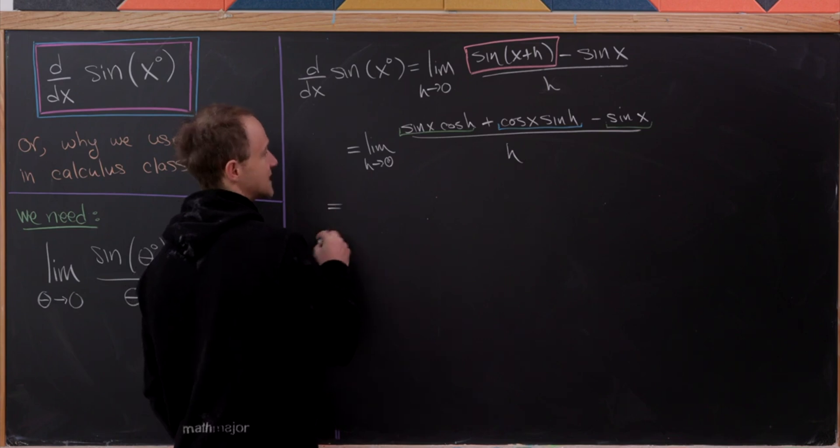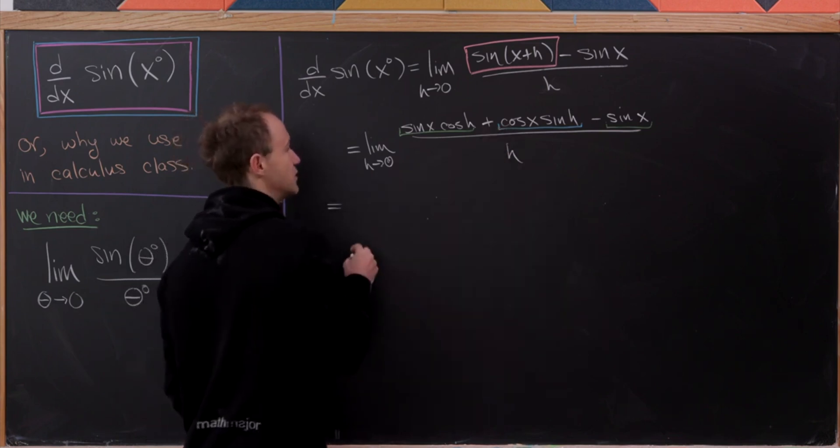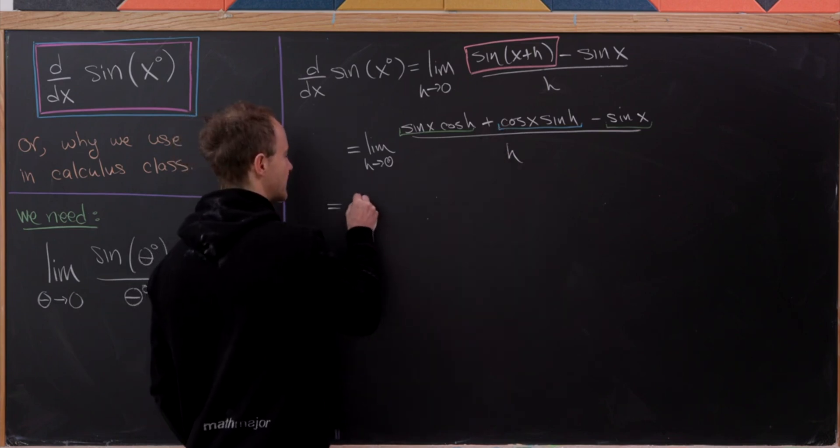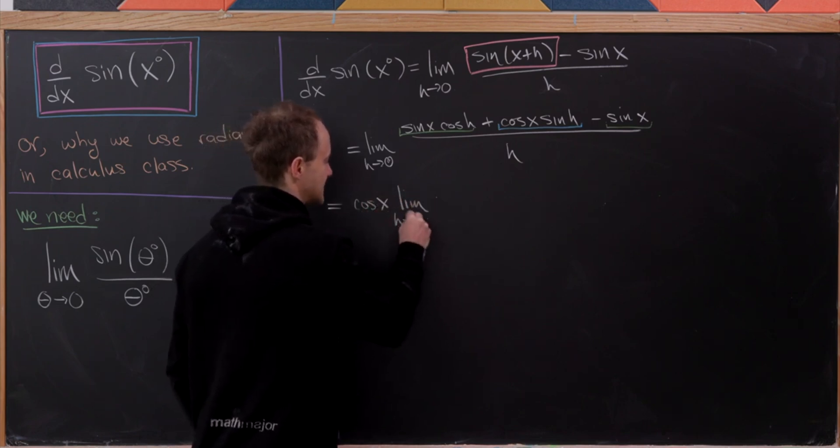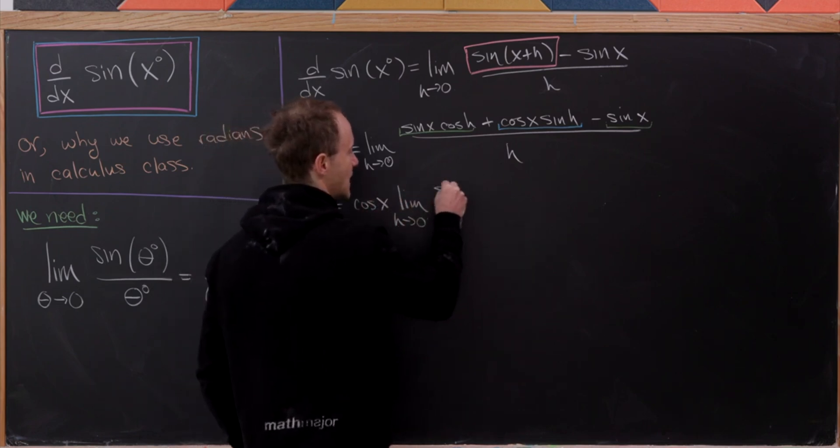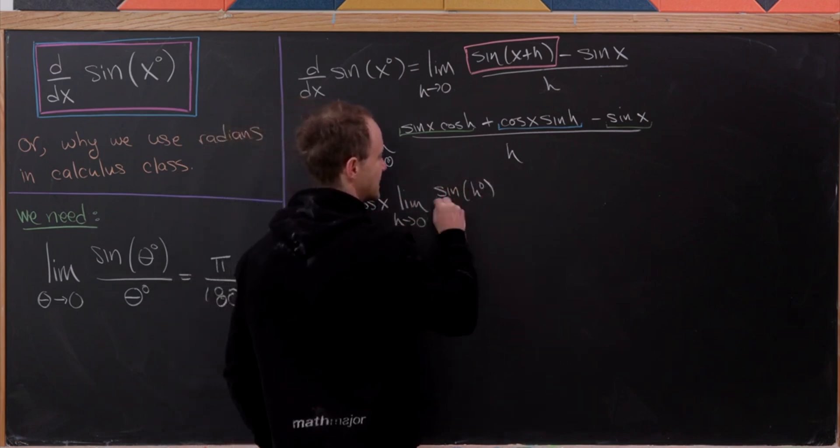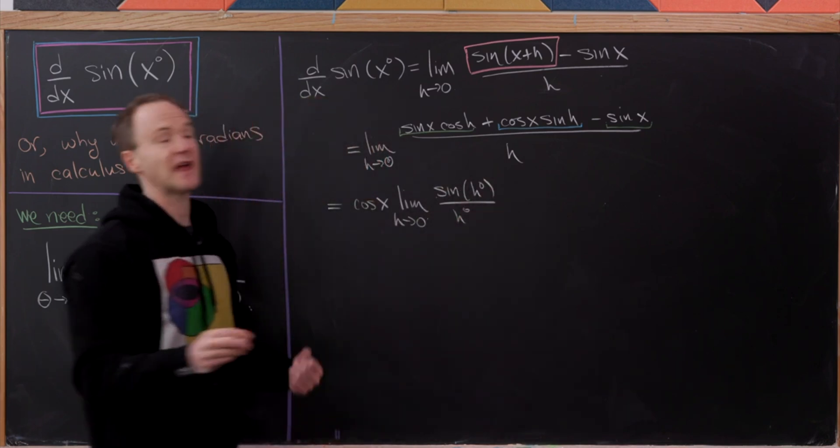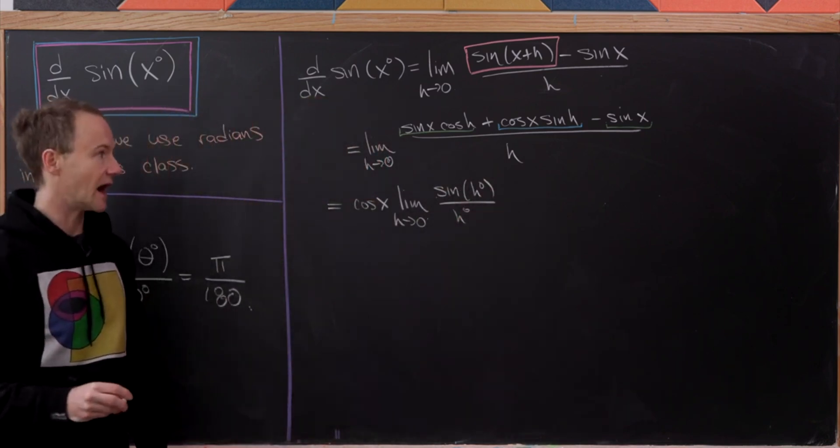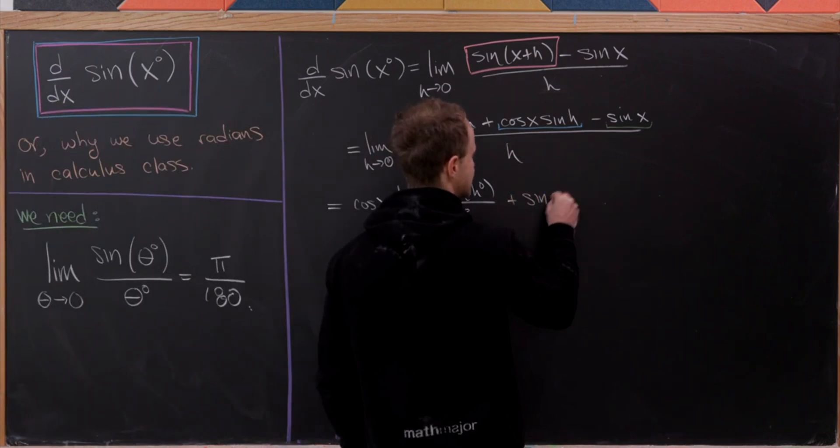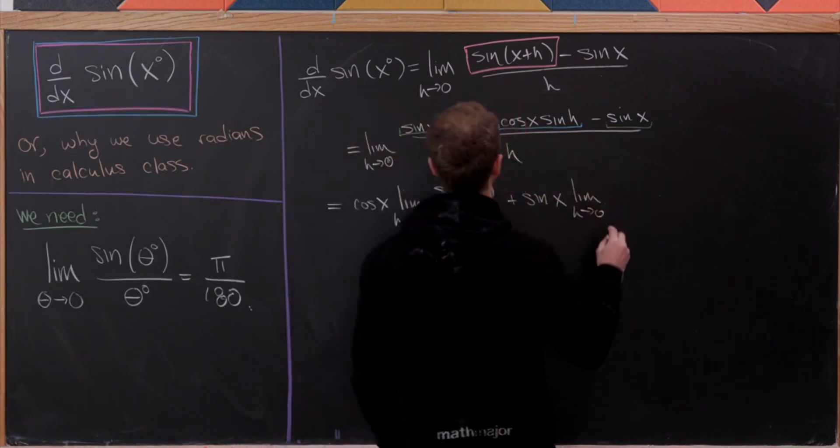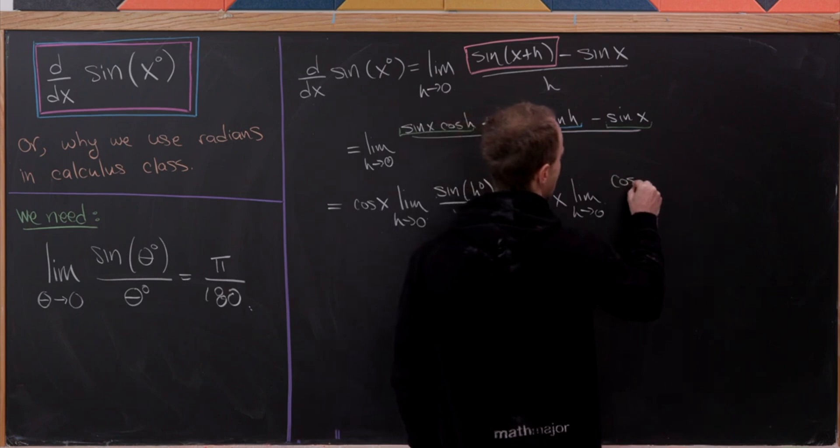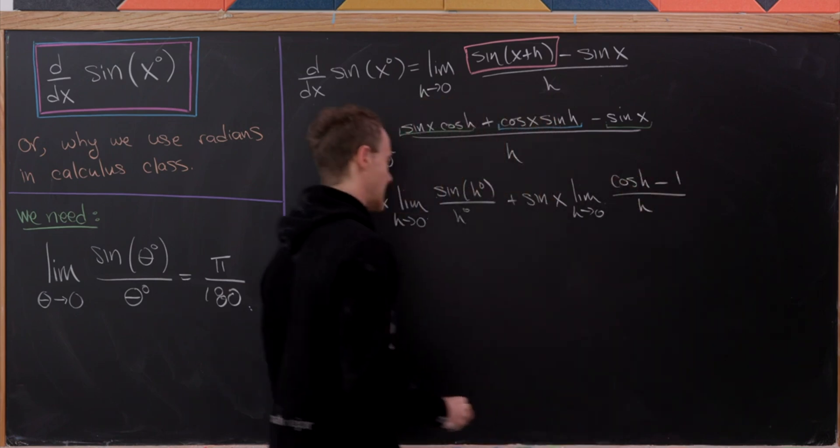So let's see this blue term. So we can factor a cosine of x out, and we're left with the limit as h goes to 0 of sine of h degrees over h degrees. I'll put the h degrees back in now. And then we'll have plus sine of x times the limit as h goes to 0 of—now we have cosine of h minus 1 over h.